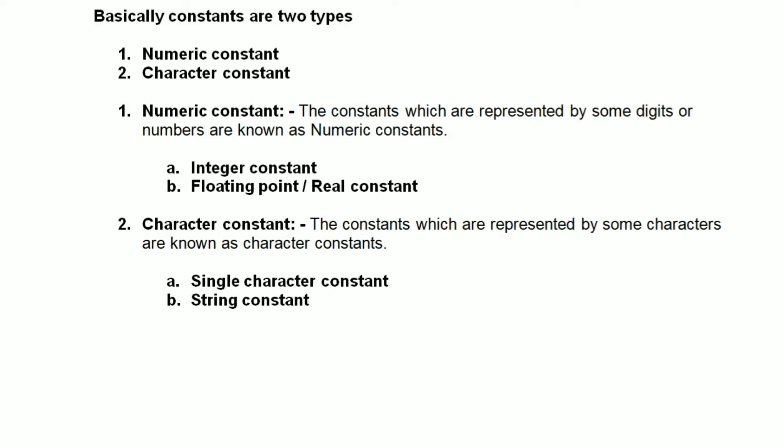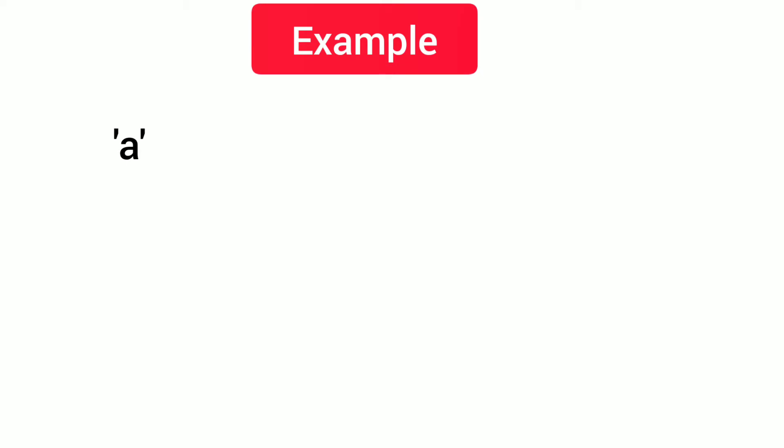Character constants are divided into two types: the first is single character constant, and the second is string constant. A single character constant is a single character enclosed within single quotation marks. For example, 'a' — it is a single character, so it is a single character constant.